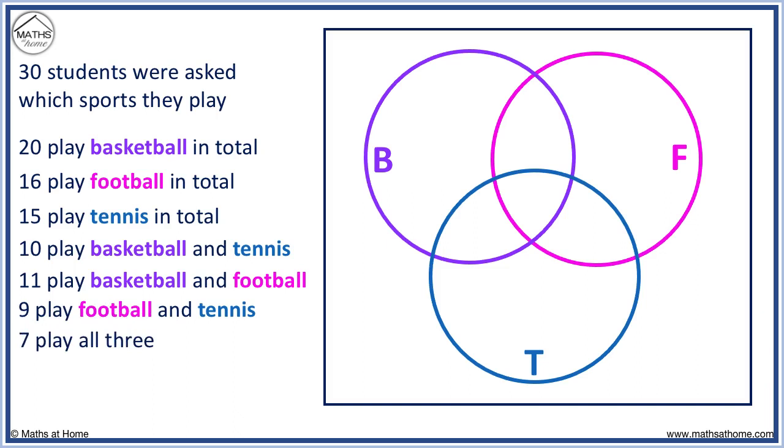7 people play all three, so we put a 7 inside the overlap of all three circles. We cross off any information we have entered on our Venn Diagram.